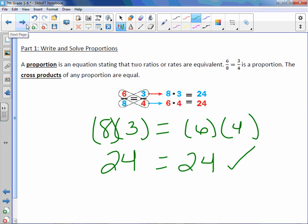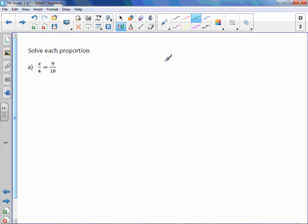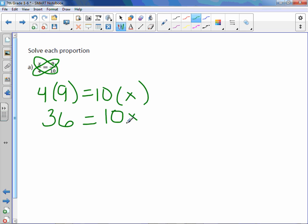We can use this to solve for an unknown amount. For example, here we have an unknown. We have x over 4 equals 9 over 10. Let's use our cross products or cross multiplication. 4 times 9 equals, now do the other ones, 10 times x. 4 times 9 is 36. And 10 times x. We don't know what x is, so it's simply 10x.